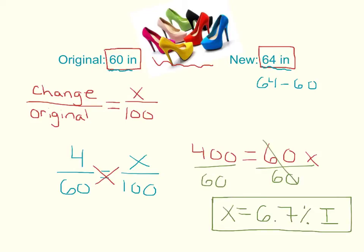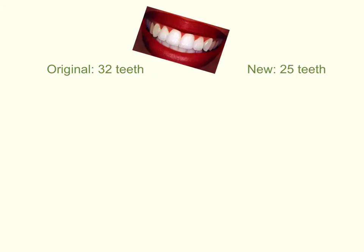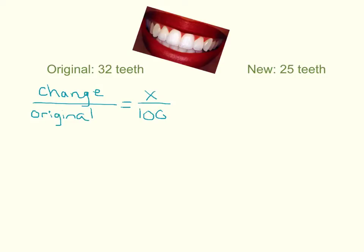In this example, Jenna started with 32 teeth, but she went trick-or-treating, ate all of her candy in one night, and didn't brush her teeth — so now she's down to 25 teeth. What is the percent of change of her teeth? We first find the change.